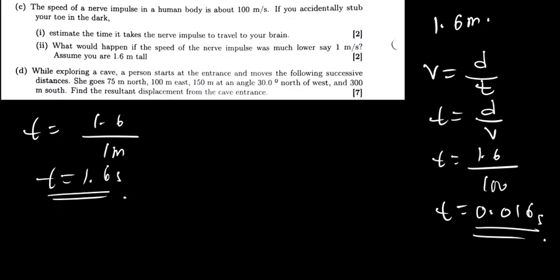We can clearly see that when the speed was higher, when the speed was 100, it took less time, 0.016 seconds for the nerve impulse to reach the brain. So now if the speed is lower, it will take more time for the nerve impulse to reach the brain.